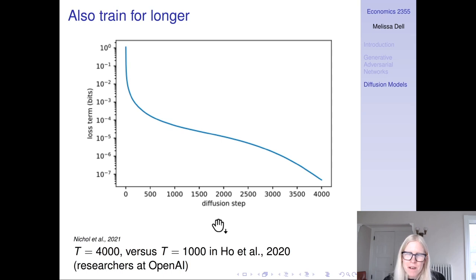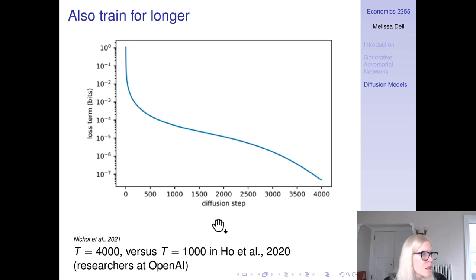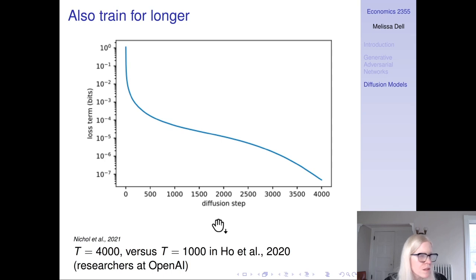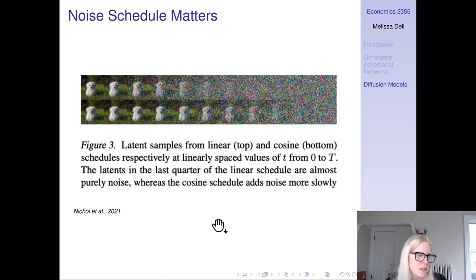The authors on this paper are at OpenAI, and not surprisingly they find that you need to train for longer. If you use more diffusion steps it works a lot better — previously people had used around 1000, and you can see that the loss goes down quite a bit using 4000 diffusion steps. They also find that the noise scheduler matters.